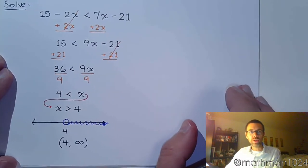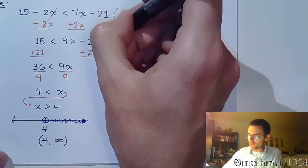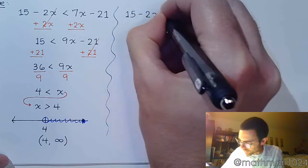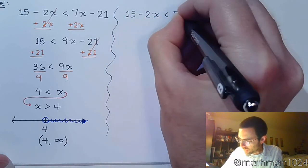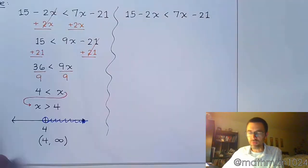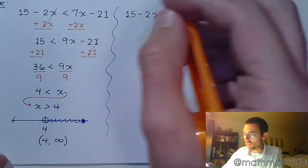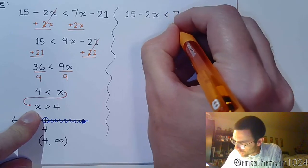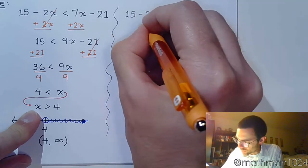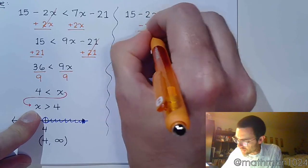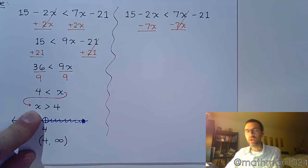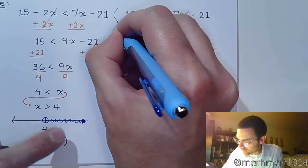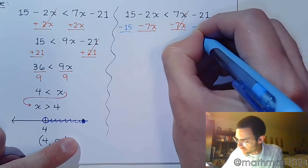Now there is another way that we could have solved this inequality. Let's see what happens if we do it the other way, and by the other way I mean what if we move the variable term to the left side. I mean, that's where we had it at the end anyway, maybe that's what we should have done at the very beginning. So let me subtract 7x on both sides, minus 7x, minus 7x like that. And while we're here, let's just go ahead and do that step of moving the constant to the other side by subtracting 15.